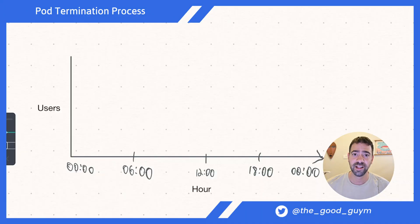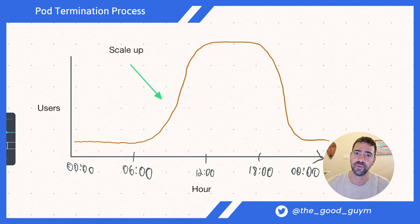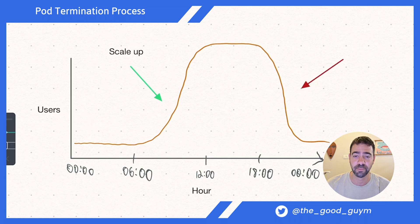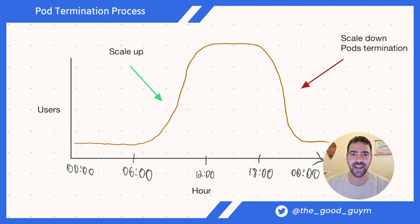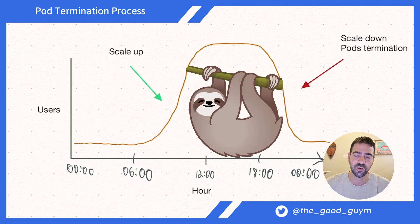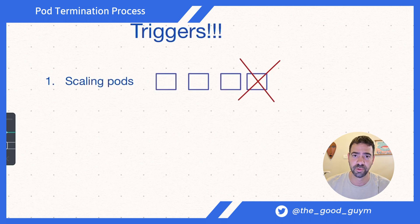Pods are ephemeral units of work that are actually designed to be terminated. Here we can see a common scenario example of users working during the day with your application. We can see the scale up of pods during the morning and the scale down of pods later in the evening. During the time of the scale down, there is a massive pod termination to support the scale needed, because we don't want to keep pods alive doing no work.